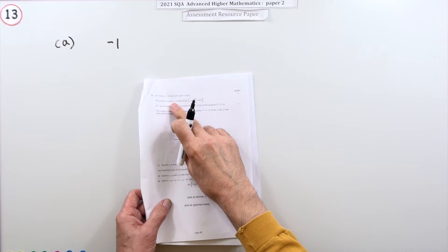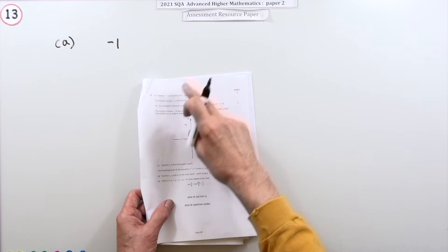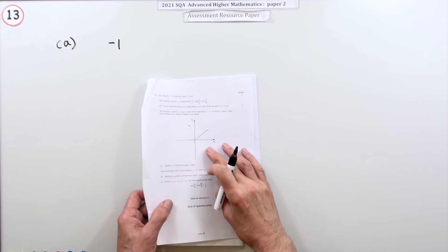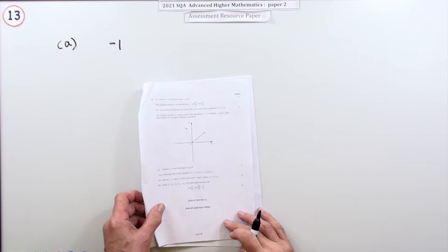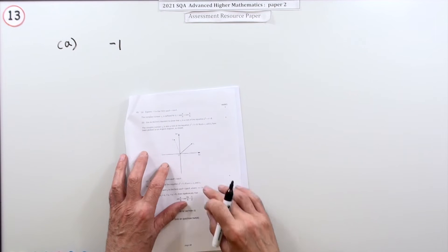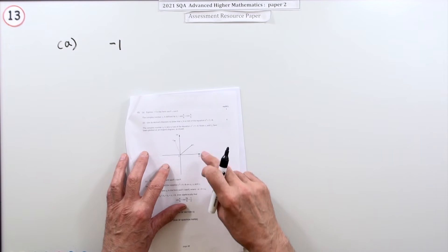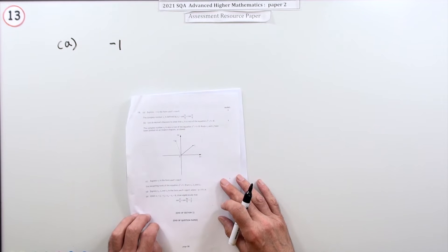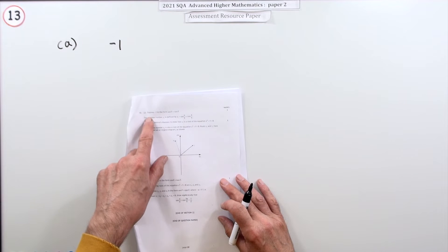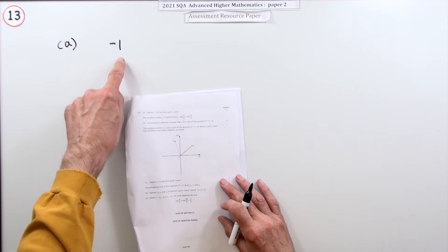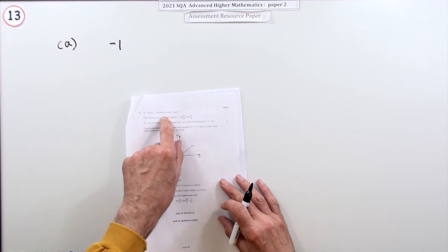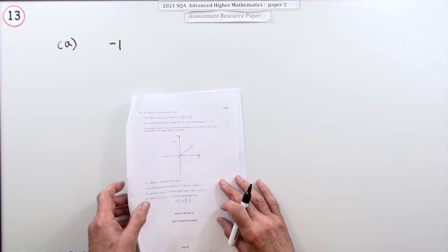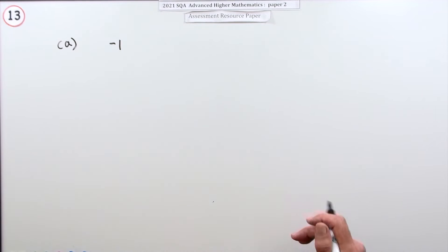So number 13, the last question in paper two and part b of the 2021 Advanced Higher resource paper — complex numbers, Argand diagram, roots. What does it say? First of all, just for the one mark: express negative one in polar form, in the form cos θ + i sin θ.